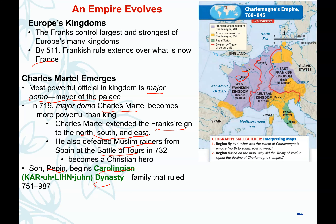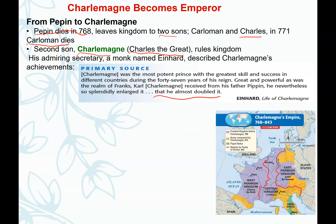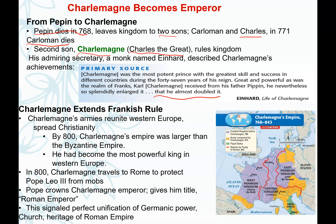Looking at the map, the purple shows the territory Pippin had controlled before Charlemagne. The yellow or orange represents the land Charlemagne gained — a very large increase in territory. While doubling may be an exaggeration, he clearly expanded the empire significantly, which is why he was seen as such an incredible leader.